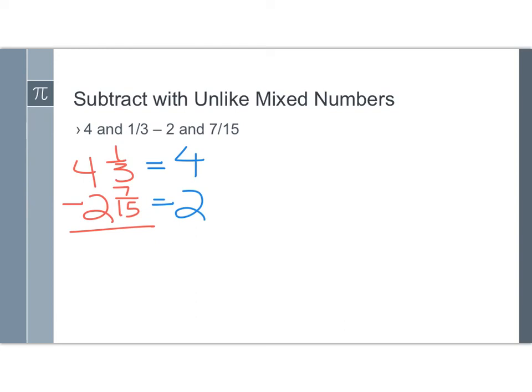To find the common denominator between 3 and 15, I'll start with the question, does the smaller one go into the bigger one evenly? 3 does go into 15 evenly, so my new denominator is 15. The nice thing about that is this fraction already had a denominator of 15, so the numerator won't change either. For the top one, 3 times 5 is 15. Whatever I do to the bottom, I have to do the same thing to the top. 1 times 5 is 5.